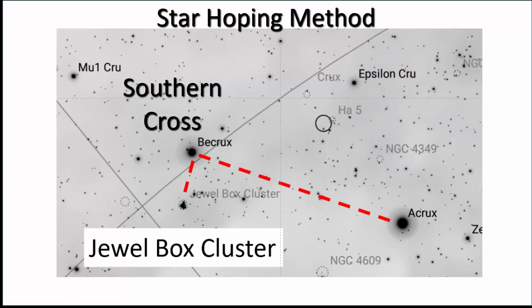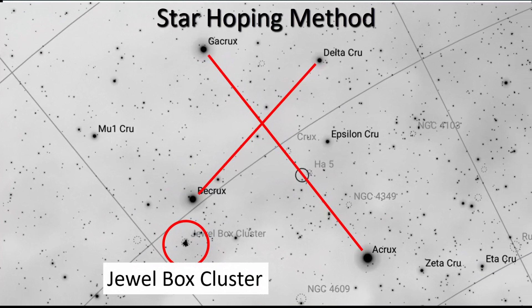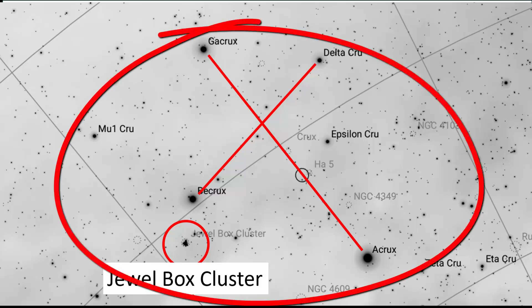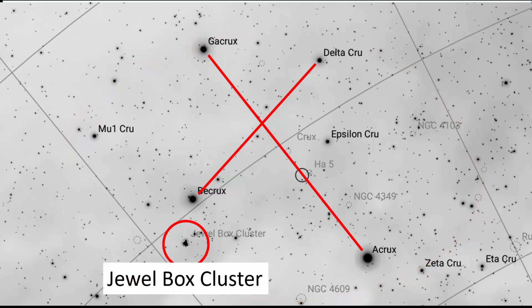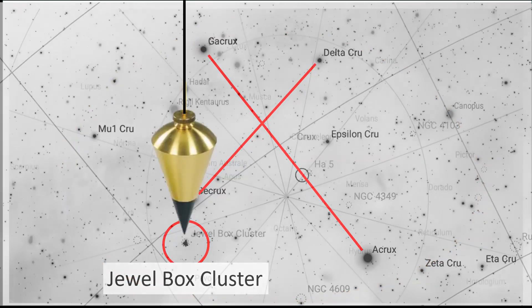The star hoping method is a bit more hit or miss. Use your planetarium app to show you where your faint target object is in the sky relative to some nearby naked eye stars. Now go straight to the plumb bob method to point the telescope as best you can to the target object location.